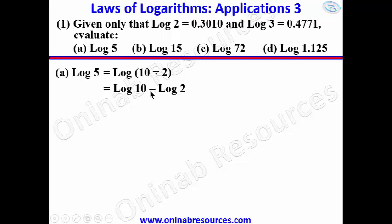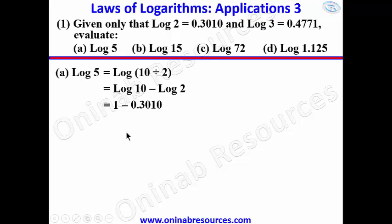Therefore we write log 5 as log(10/2). Since this is division, we apply the quotient law: log 10 minus log 2. We know log 10 base 10 is 1, and we are given log 2 = 0.3010. Substituting: 1 minus 0.3010 gives 0.6990, which represents log 5 to base 10.